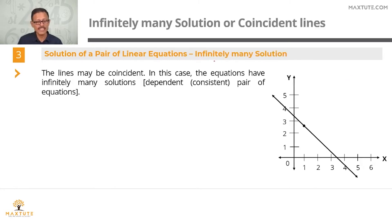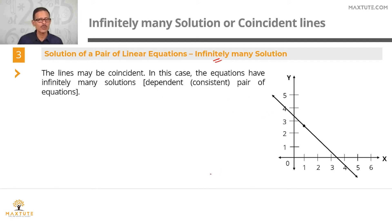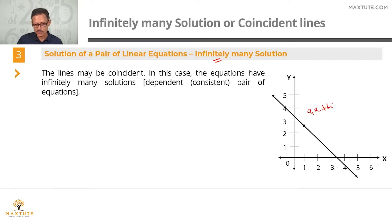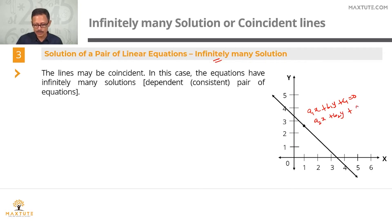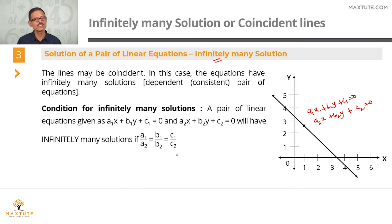The third scenario is infinitely many solutions. That happens when the two straight lines are coincident — one lies flat on top of the other. Any point on one line is a point on the other. These form a dependent pair of equations. The condition is: a1 by a2 equals b1 by b2 equals c1 by c2.